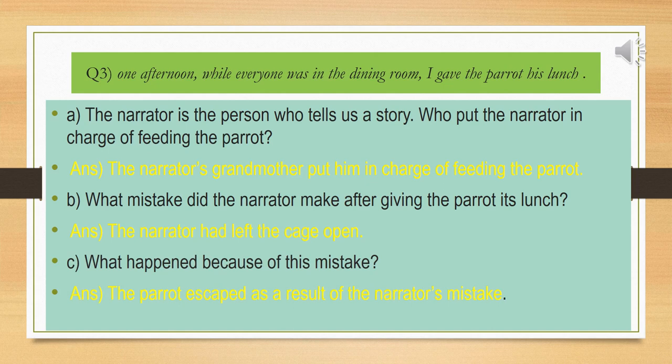Question number 3: One afternoon while everyone was in the dining room, I gave the parrot his lunch. Who put the narrator in charge of feeding the parrot? The narrator's grandmother put him in charge of feeding the parrot. What mistake did the narrator make after giving the parrot its lunch? The narrator had left the cage open. What happened because of this mistake? The parrot escaped as a result of the narrator's mistake — because he left the cage open, the parrot flew away.